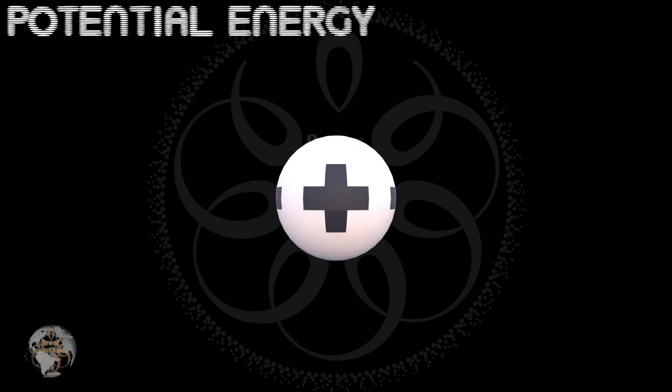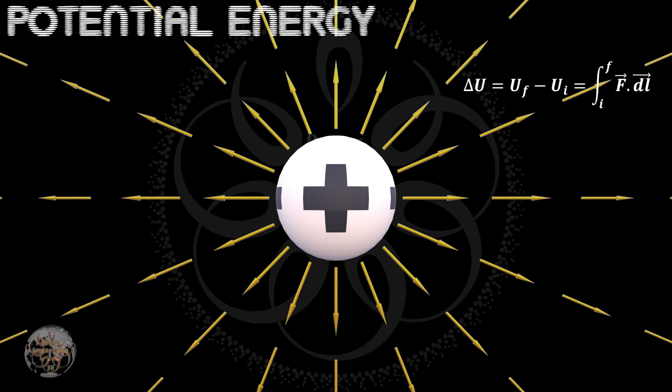Now, let's examine electric potential energy. The change in potential energy for a test charge in an electric field is given by the equation shown. It indicates how much the test charge's potential energy will change when moving from point I to point F.